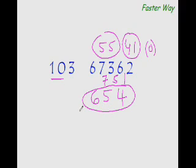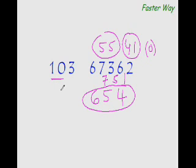Again, it is based on the same logic: dividing by 103 might be difficult, but dividing by 10 is the simplest operation in mathematics. So that would not be a problem at all. Now let's see more examples.